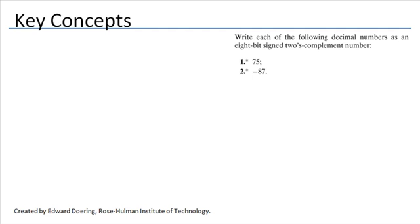In this problem, we want to write a pair of decimal numbers as 8-bit signed 2's complement numbers.